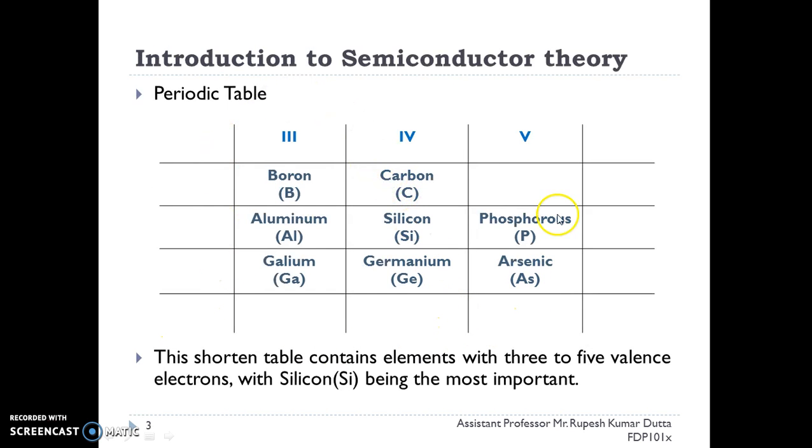This is a small portion of the periodic table in which we are shown group 3, group 4, and group 5 elements. Group 4 elements are known as semiconductors and those are carbon, silicon, and germanium.